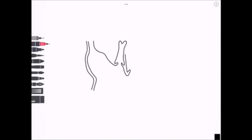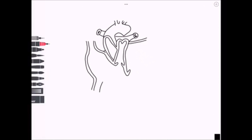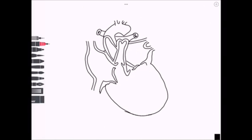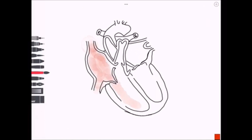Welcome to another Sotten Brain Hub video. In this one we're going to look at the conduction system of the heart and the autonomics that supply the heart. Here we can see an anterior view, with the atria, ventricles, and the great vessels.